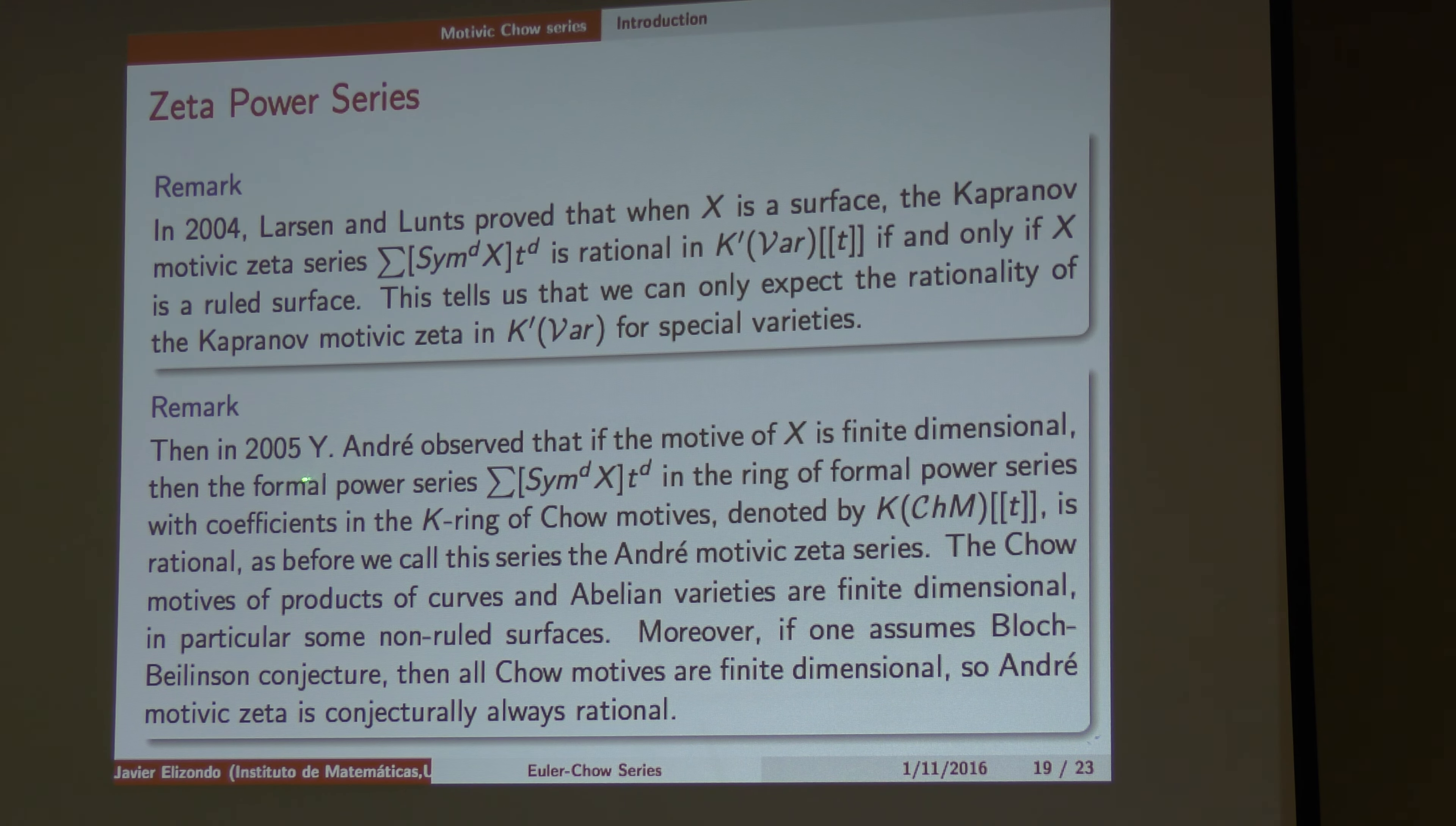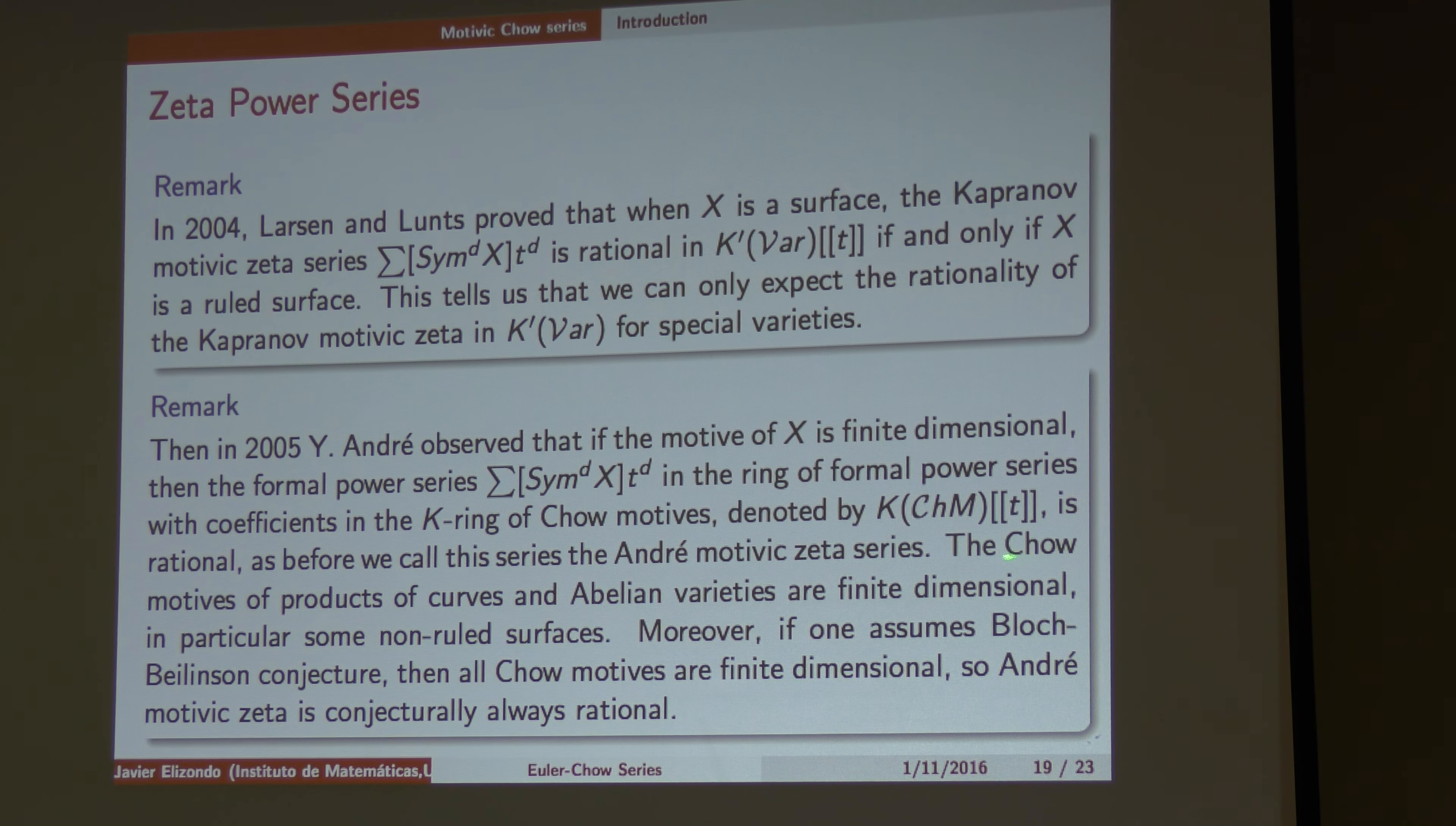Esnault and Levine proposed in 2005 a series like this one. When you are in the motifs, in the category of motifs. And it's called the Esnault-Levine zeta function. So he proved, for instance, the product of Chow varieties, and Abelian varieties, I find that he mentioned, but there were some normal surfaces.